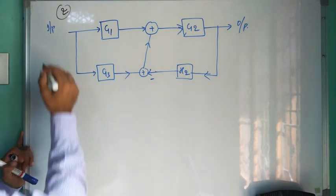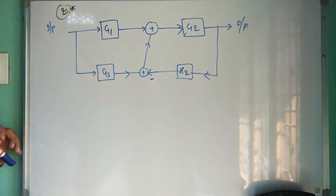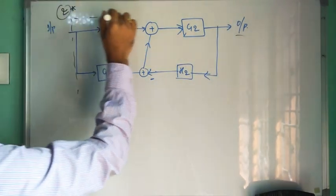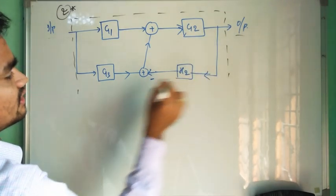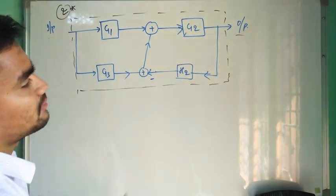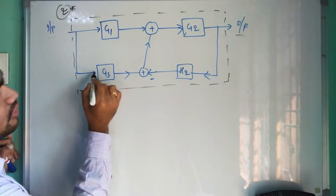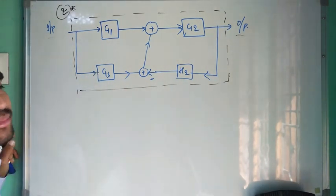This is a very important example because you can see this is the input and this is the output. We are going to reduce the complete blocks into a single block which makes our calculation easier. The direction of arrows is very important in the block diagram reduction concept.